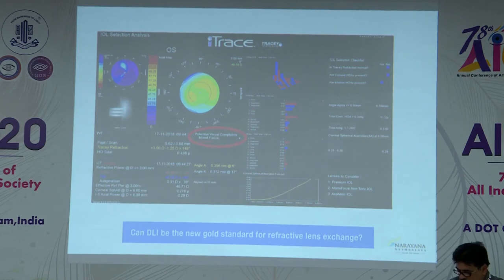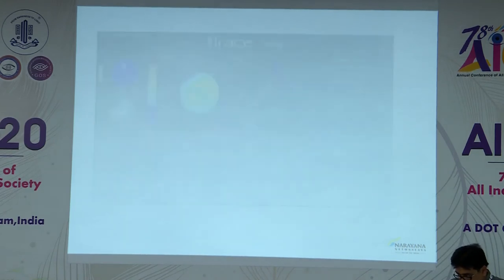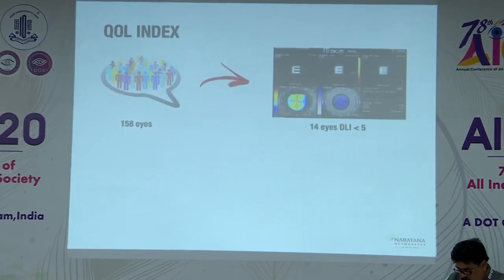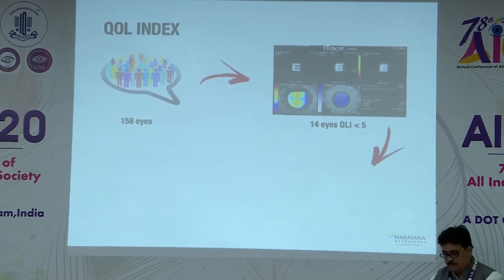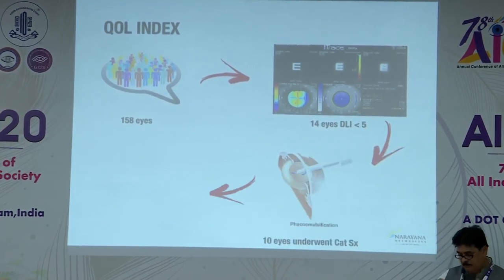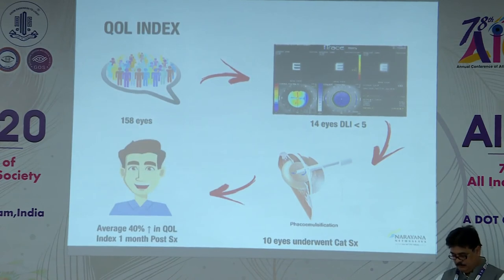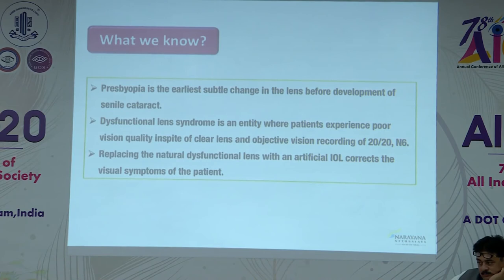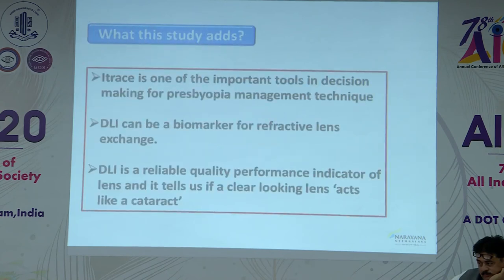The DLI can be the new gold standard for refractive lens exchange because it objectively captures the symptoms the patient is experiencing. Of 158 patients, 14 had DLI less than 5, and 10 of these underwent cataract surgery. An average 40% increase in quality of life was seen one month post-operatively. What we know as presbyopia is the earliest subtle change in the lens before development of senile cataract. DLI is an entity where patients experience poor quality of vision despite having 6/6 visual acuity.